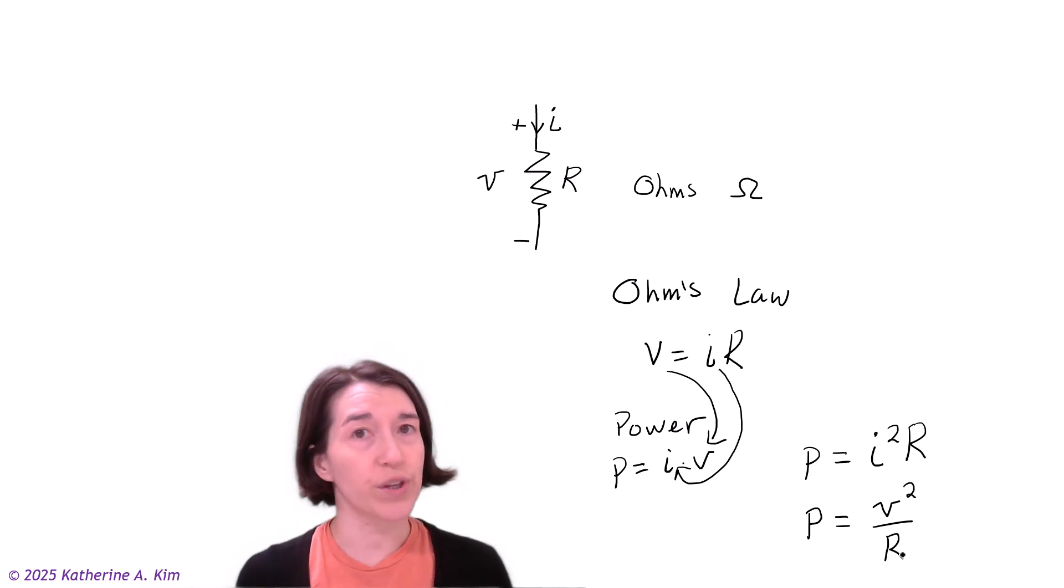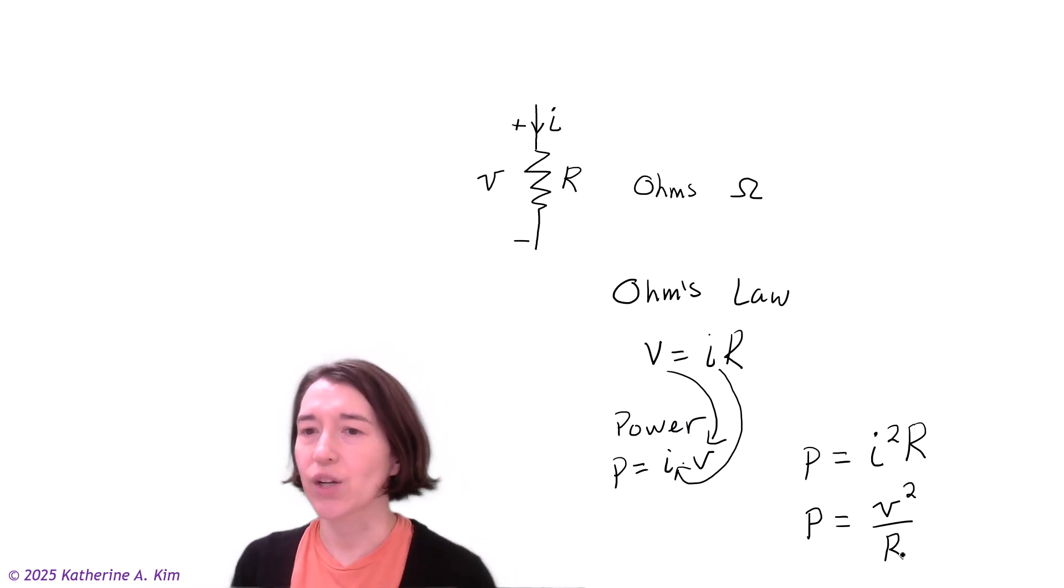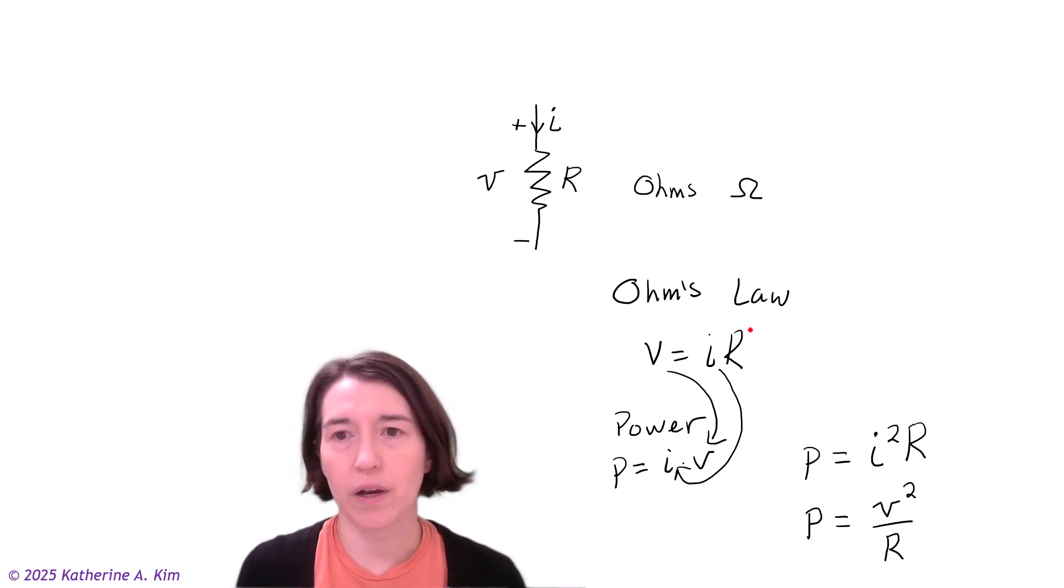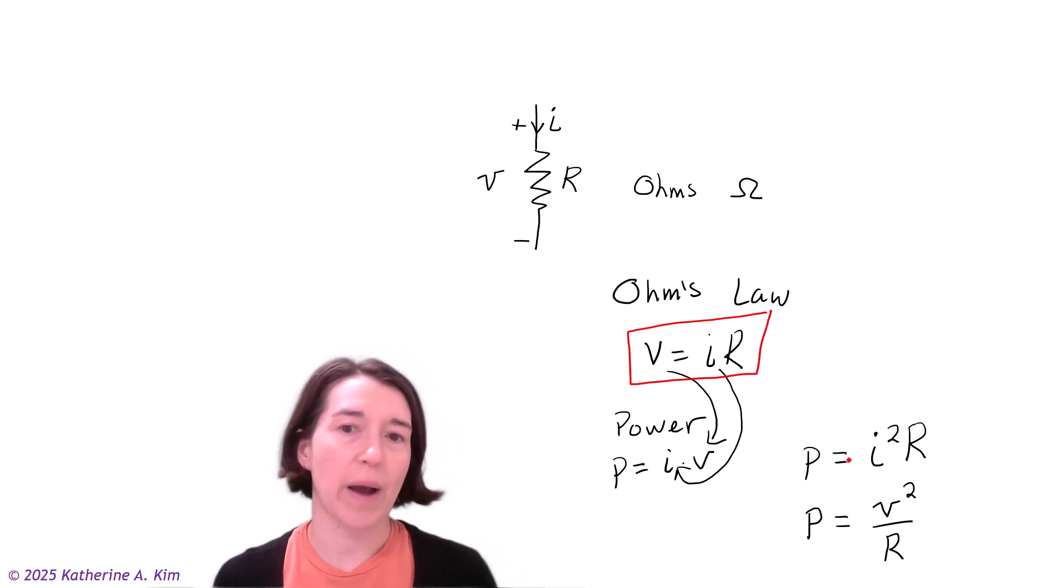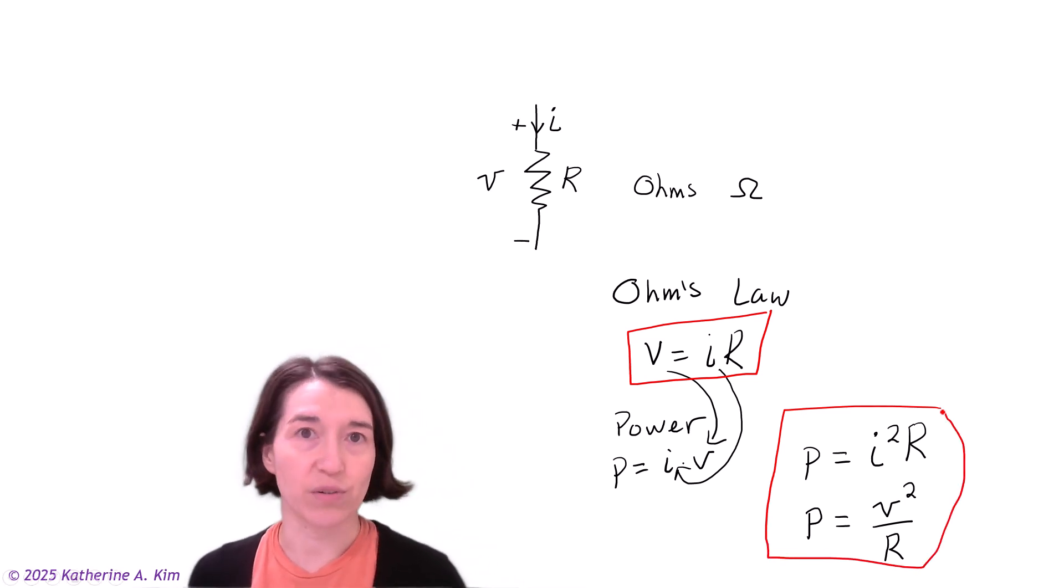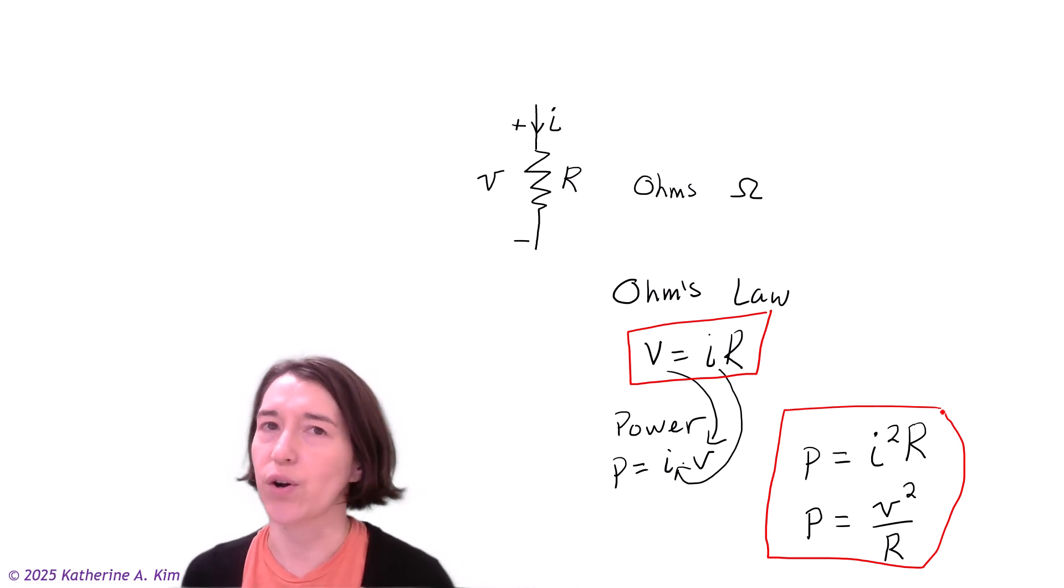So if you know the voltage or current and the resistance, you can directly get the power by using Ohm's law. The key things to remember are V equals IR, and the power through a resistor is P equals I squared R or V squared over R.